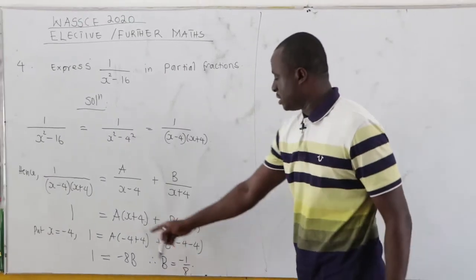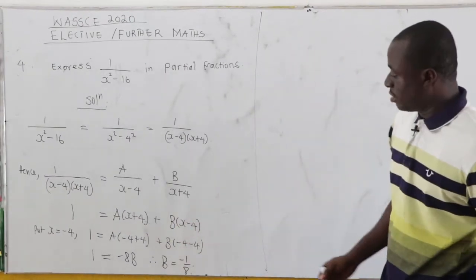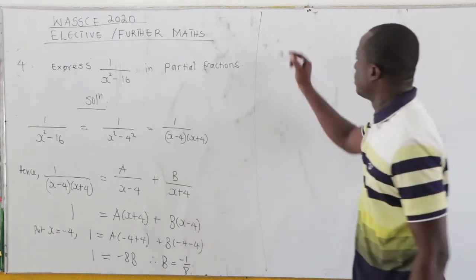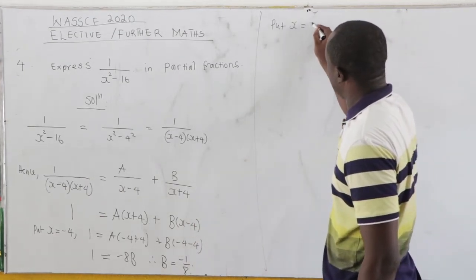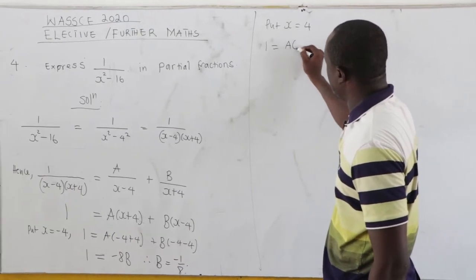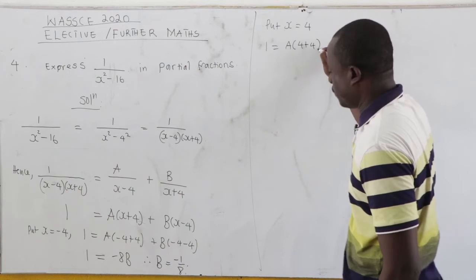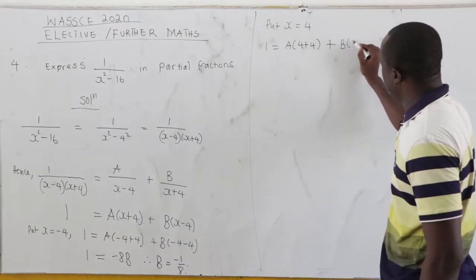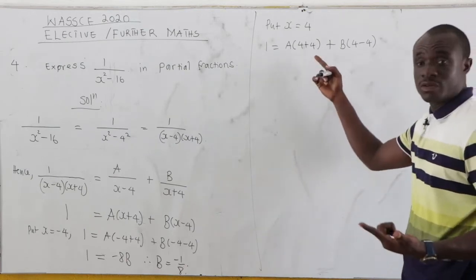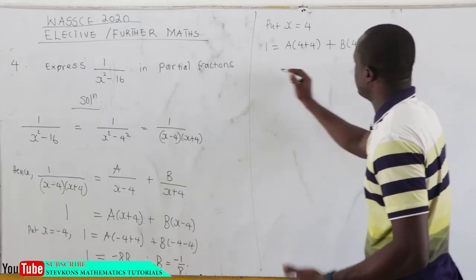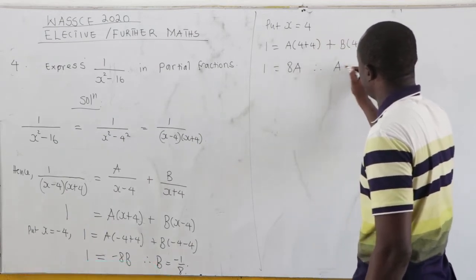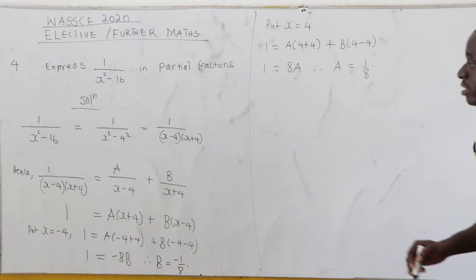Now we eliminated A. Let's eliminate B. So we put x to be equal to 4 because we have 4 minus 4, which is 0. Now we have 1 to be equal to A times 4 plus 4 plus B times 4 minus 4. Now 4 minus 4 is 0. 4 plus 4, that is 8. So we have 1 to be equal to 8A. Therefore, A is 1 over 8.